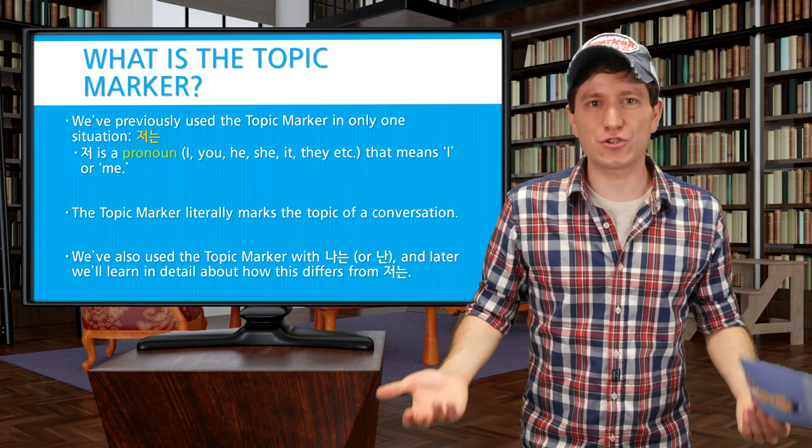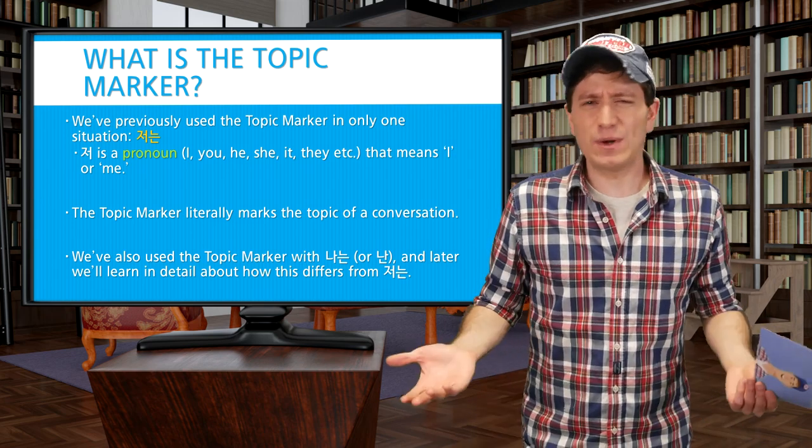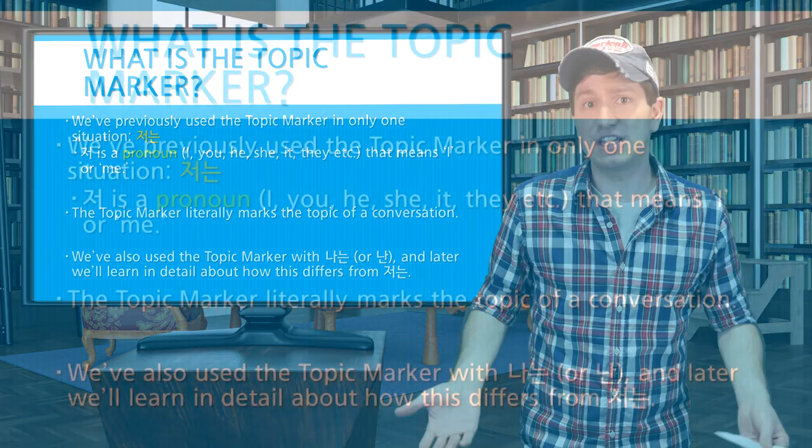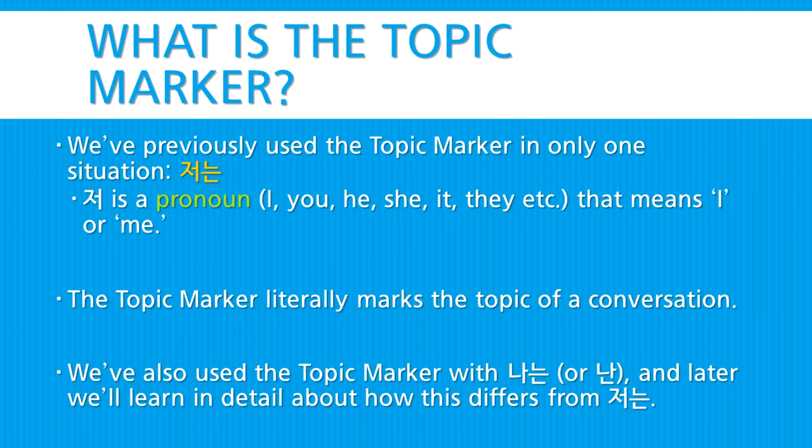We have used the topic marker so far in a few examples, but we haven't talked about what it is or how to use it. Previously when we did the sentence 저는 빌려요, that part 는, 저는—the 는 is actually known as the topic marker.